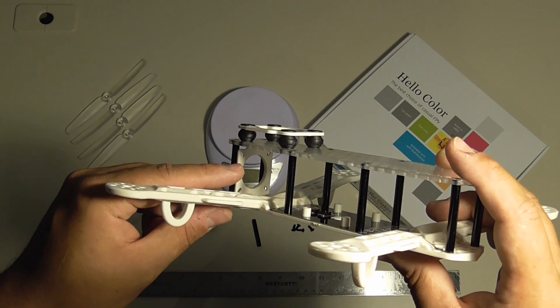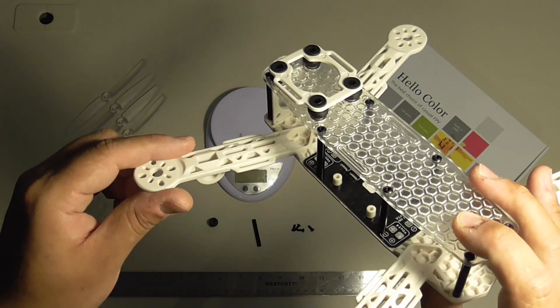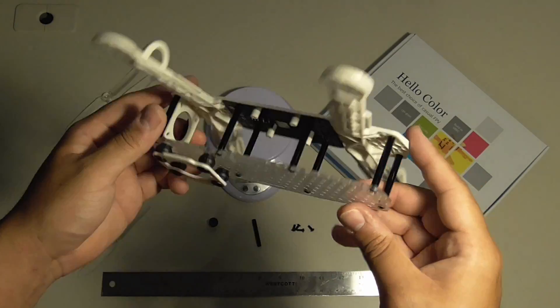Both the FPV camera mount, the vibration isolation mount, and the main base plate and arms I believe are all made of a fiberglass reinforced plastic.